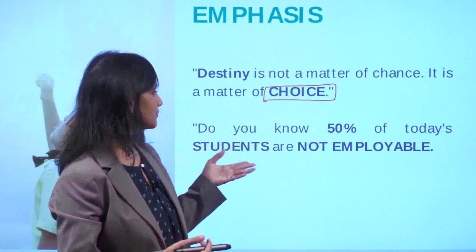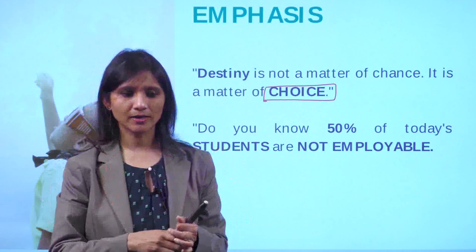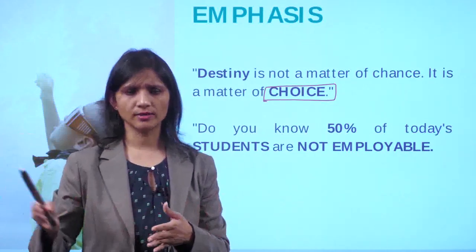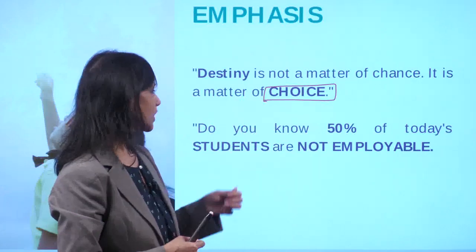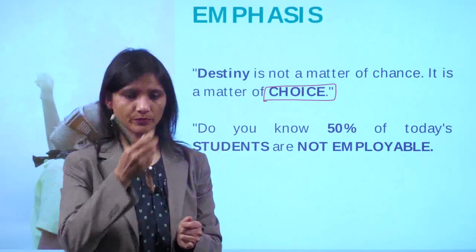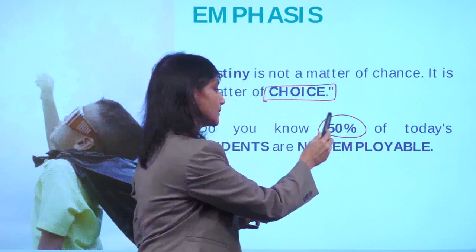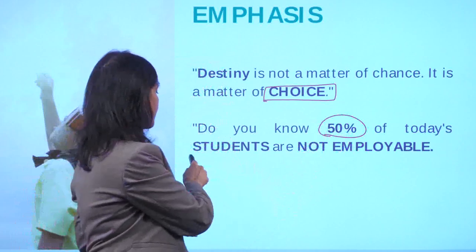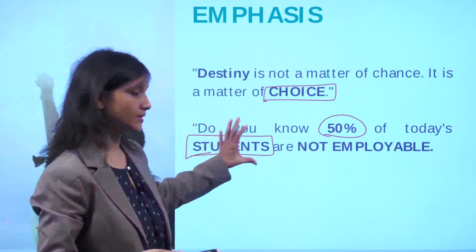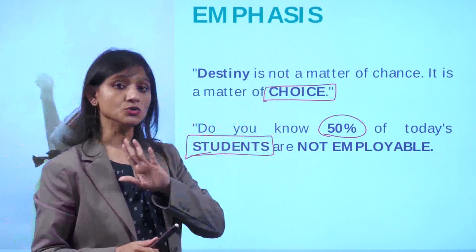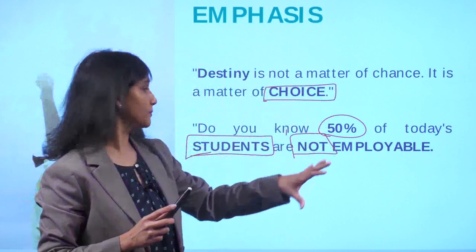Next, you're giving factual data and saying: 'Do you know fifty percent of today's students are not employable?' If I just say 'fifty percent of students are not employable' without emphasis, it doesn't strike a chord. I'm not emphasizing what is important. Let's reread the same sentence - this could also be a starting line for your speech: 'Do you know fifty percent of today's students...' Here, 'fifty percent' is a very important data point, and 'students' is being emphasized because you are addressing parents or students.